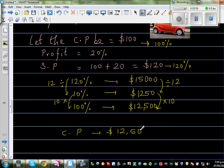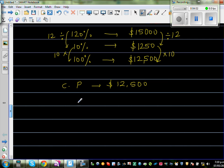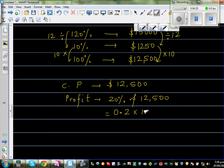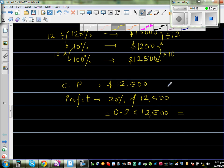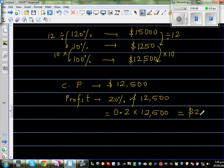So let us confirm our answer. If the cost price is $12,500, profit is 20% of it. So you find 20% of 12,500. So I will use a calculator. 20% is 20 out of 100, which is 0.2 times 12,500. So let's get the calculator out. So this is 0.2 times 12,500, which is $2,500. So profit is $2,500.